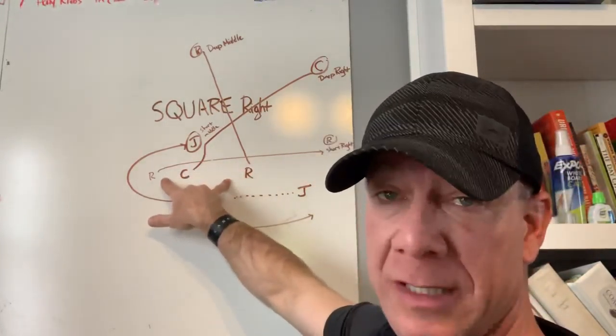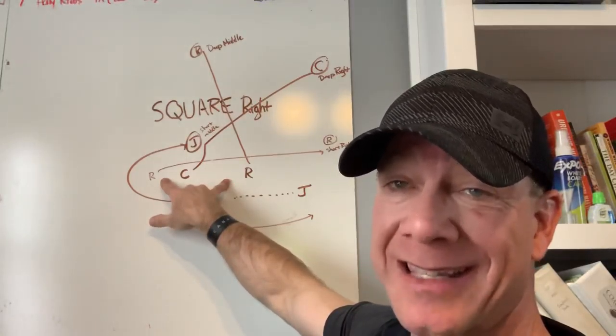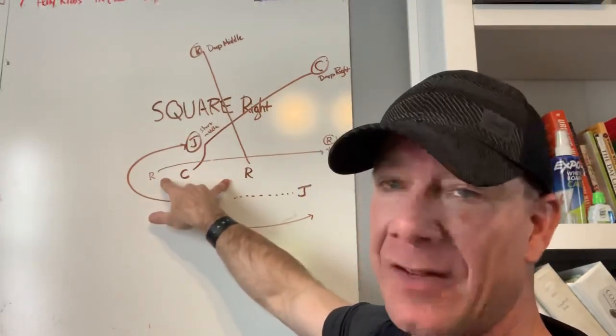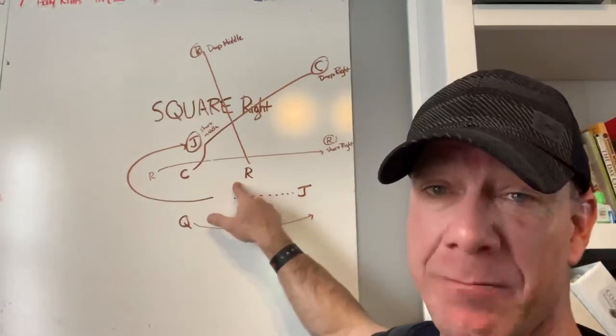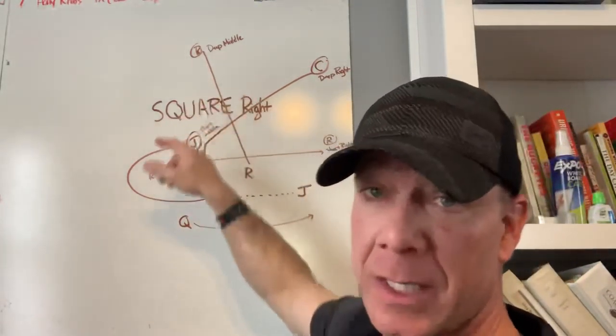There's two floating receivers that got to get to their spots. They can line up anywhere. They just have to get to their spot. So I'll tell them, I'll say deep middle. This guy's got to go deep middle.